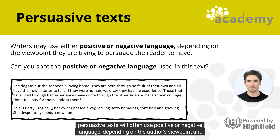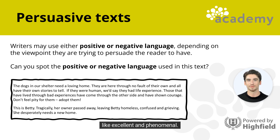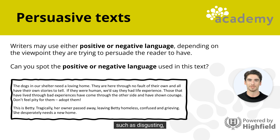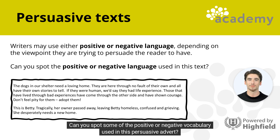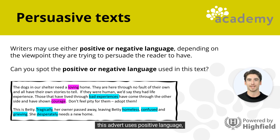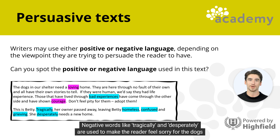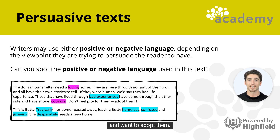Persuasive texts will often use positive or negative language, depending on the author's viewpoint. If a writer has a positive opinion, they will use positive language like 'excellent' and 'phenomenal.' If the writer has a negative view, their language will mirror this using words such as 'disgusting,' 'dreadful,' or 'horrendous.' This advert uses positive language such as 'loving' and 'courage' to help the reader connect, while negative words like 'tragically' and 'desperately' make the reader feel sorry for the dogs and want to adopt them.